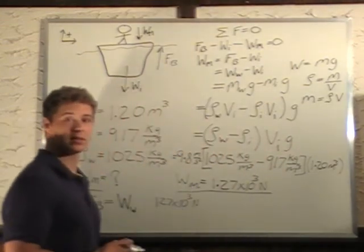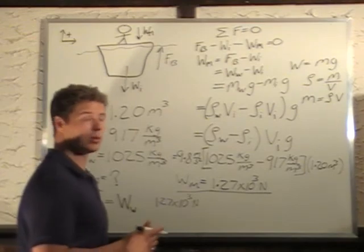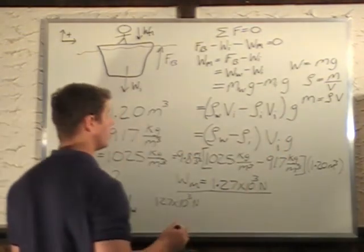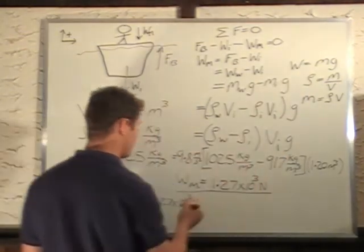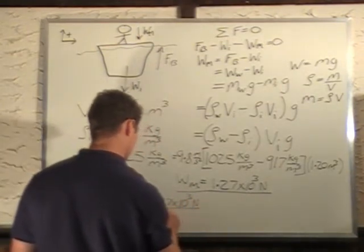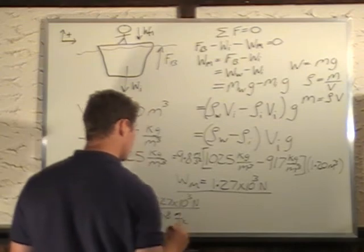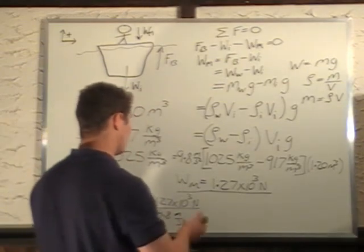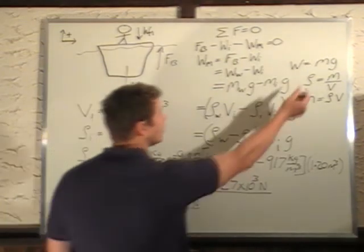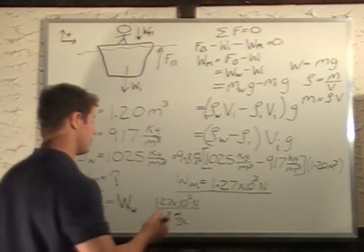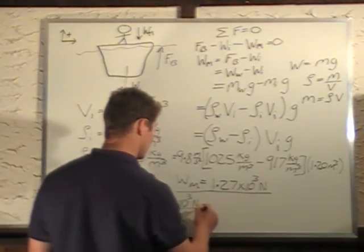Weight equals mass times G, W equals mg. So we have weight here, we want mass, we just divide by G. 9.8 meters per second squared. So this will give us our mass in kilograms. We get our mass, not our weight. So this is in kilograms.